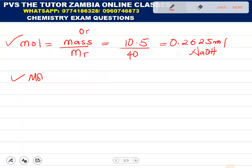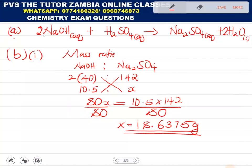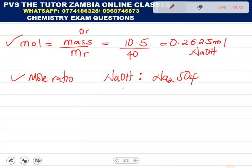Next, mole ratio. We compare the two. We have sodium hydroxide and sodium sulfate. The mole ratio is 2 to 1. Here is 1. We have 2 to 1. But the number of moles for sodium hydroxide given there is 0.2625. Here we put x. So, we divide this one by 2. So, the number of moles is 0.13125. This number of moles are for sodium sulfate.